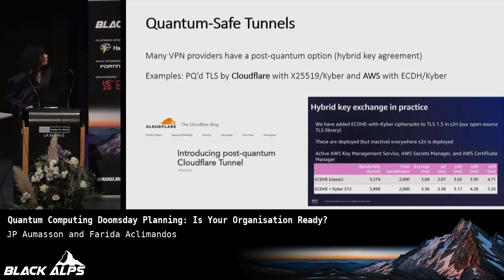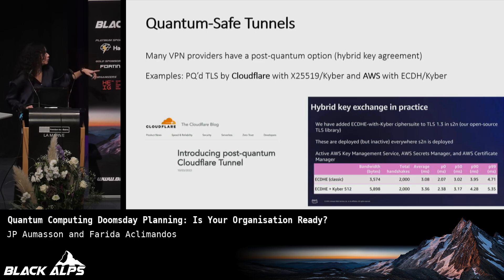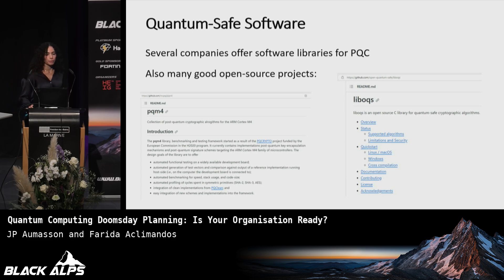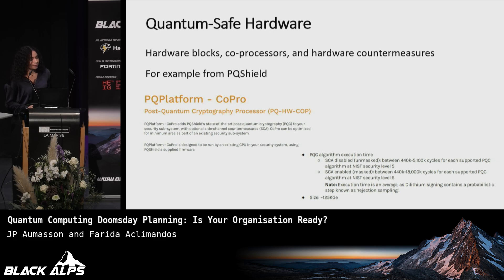Here are examples of already commercially available post-quantum TLS-based VPNs — one by Cloudflare and one by AWS. They use a hybrid approach combining classical cryptography with post-quantum cryptography, so to break the system you'd need to break both. Several companies also offer software libraries for post-quantum cryptography, and there are many good open-source projects — the post-quantum TLS that AWS uses is also open-source. There is even quantum-safe hardware, such as a post-quantum cryptography processor from British company PQ Shield, with optional side-channel countermeasures.